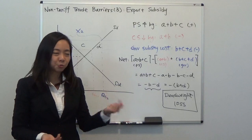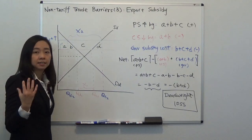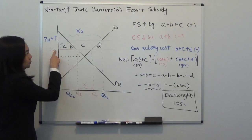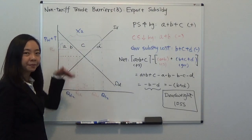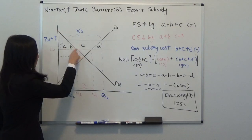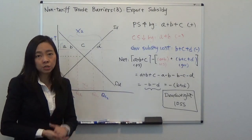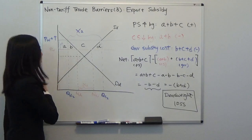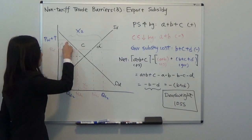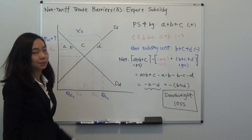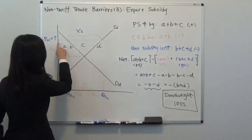What about consumer surplus? Consumer surplus is going to go down because consumers are now facing a higher price. Consumer surplus is the area below the demand curve above the price paid by the consumer. Previously with price PW it was a large triangle, but with the export subsidy consumers face the price PW plus T, so their new consumer surplus becomes a smaller triangle. Consumer surplus goes down by A plus B.